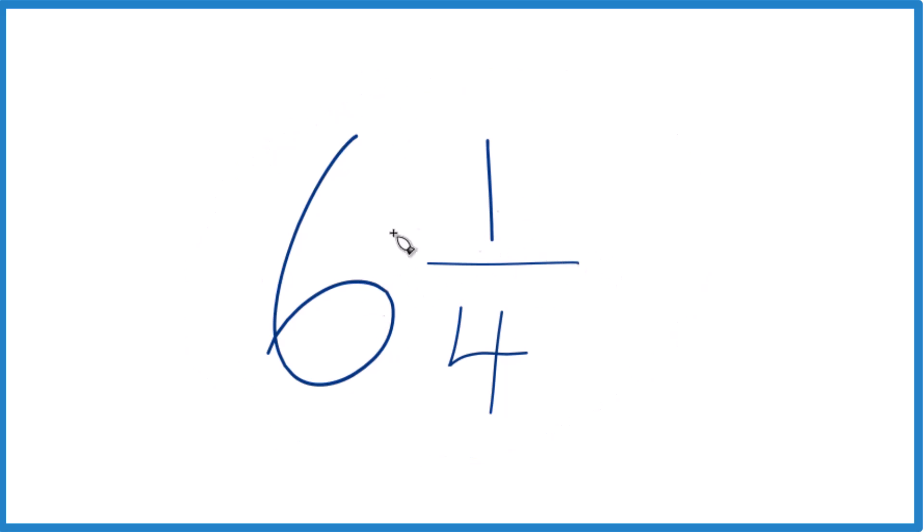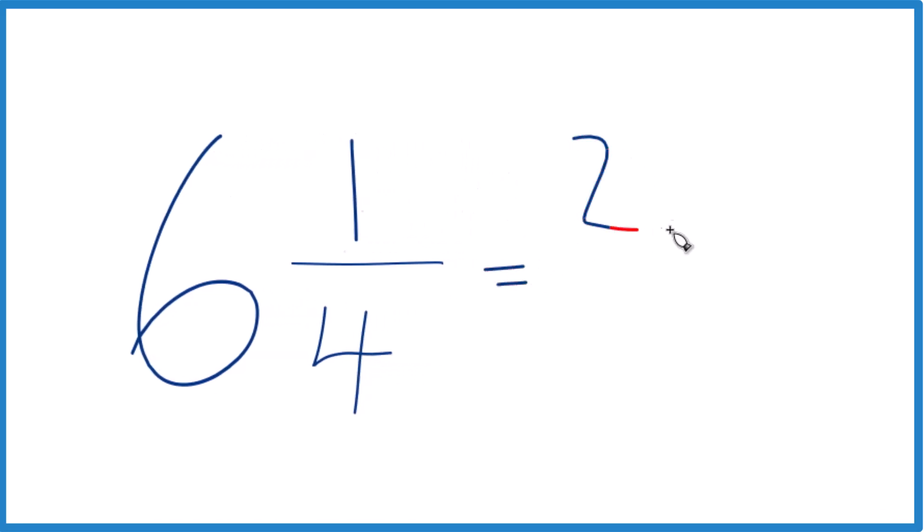Take the whole number, 6 times 4, that's 24, and then 24 plus 1, that equals 25. That's the numerator. Bring the 4 across, and you got it. 25/4ths, that's the improper fraction that's equal to the mixed number 6 and 1/4. Let's do it again.